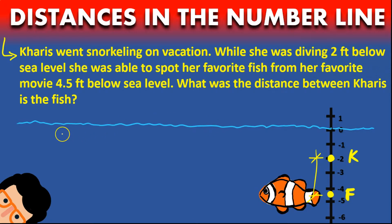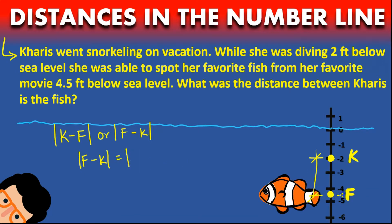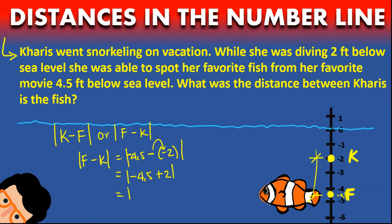We apply the same formula: Kairis minus the fish, or fish minus Kairis — the answer is going to be the same. Let's try fish minus Kairis. The position of the fish is minus 4.5 and we subtract Kairis' location, which is minus 2. So that's the absolute value of minus 4.5, and the negative changes the sign inside, so plus 2. That gives us the absolute value of minus 2.5, which is 2.5 feet. That is the distance between Kairis and the fish from her favorite movie.